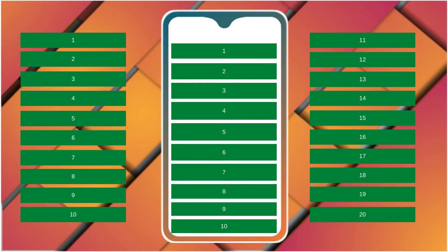So at a time, we only need 10 items to be constructed. But when we use the default constructor, it will construct all 20 items instead of constructing just those 10 children that are actually visible. So it would be inefficient if we have a large number of items.